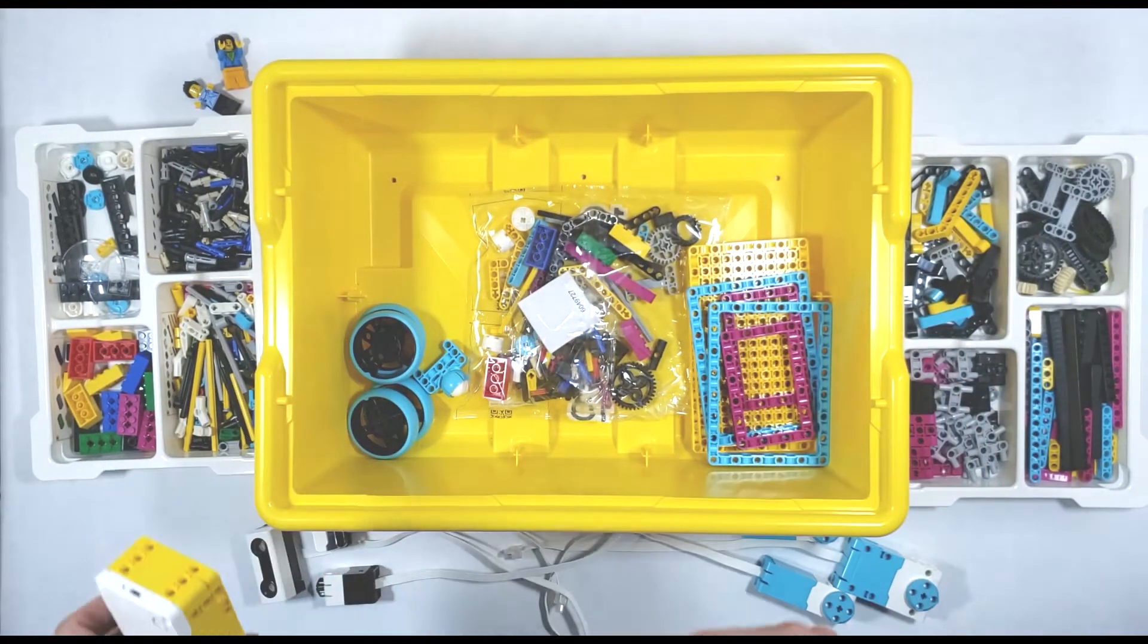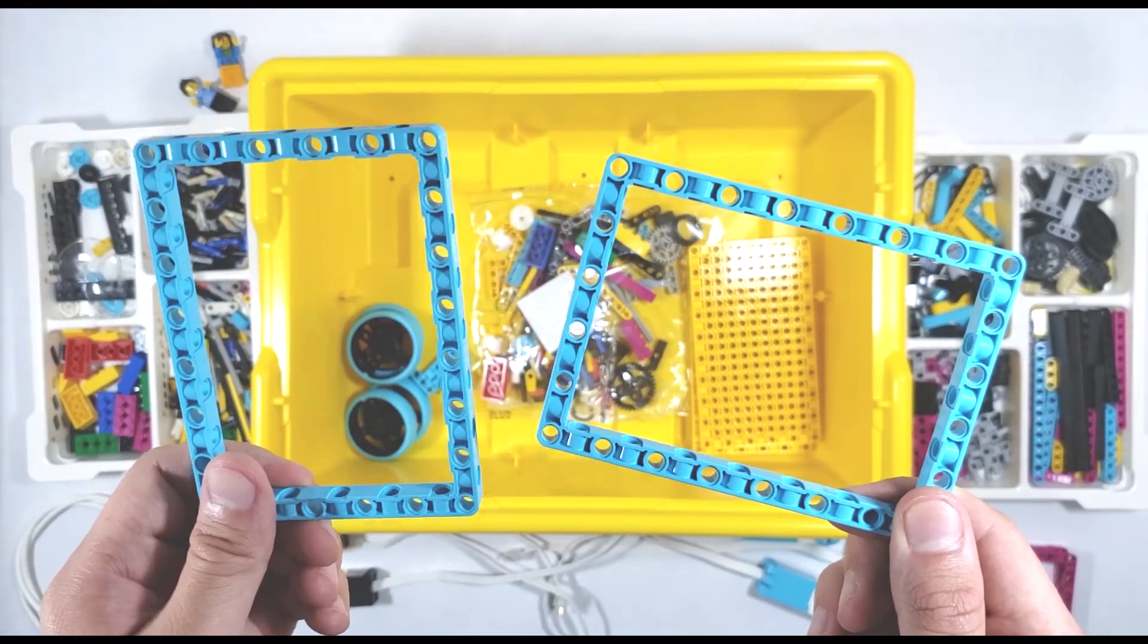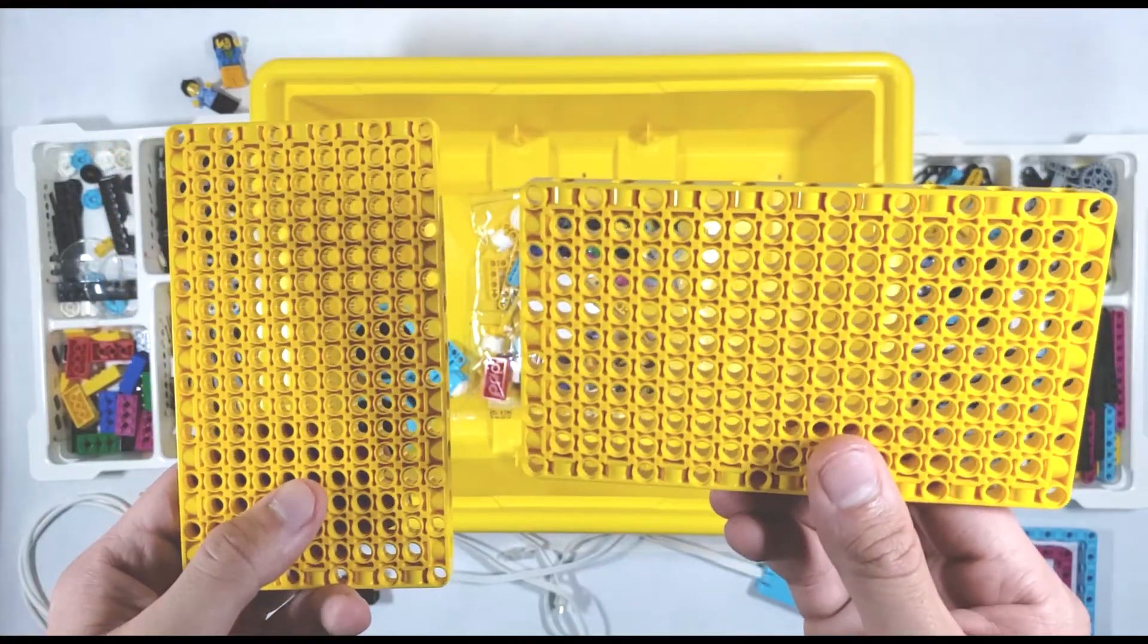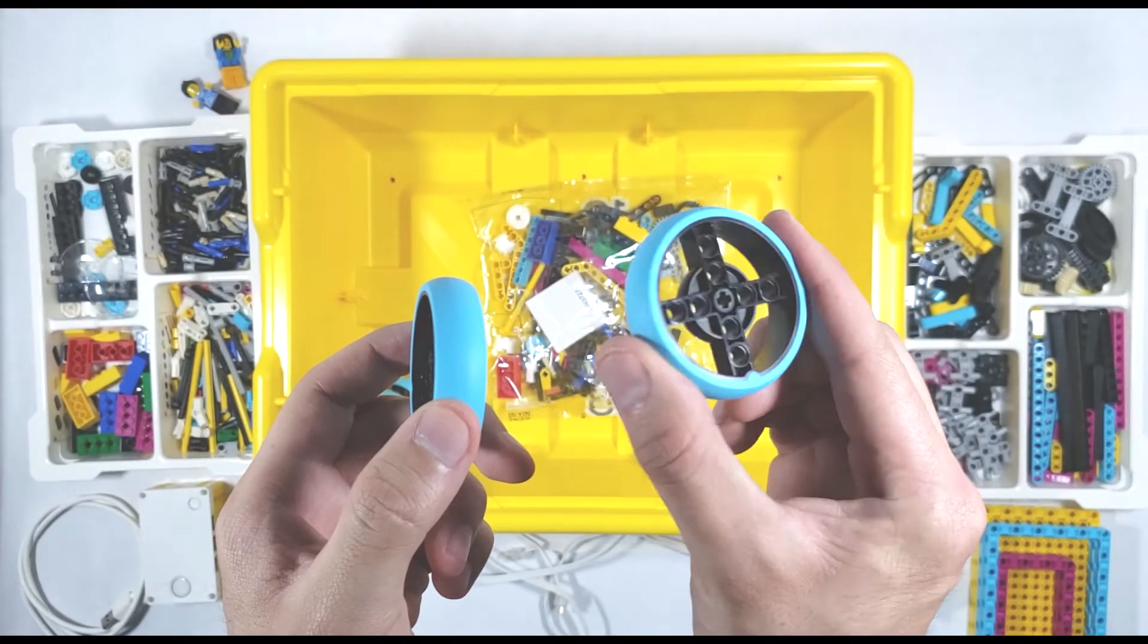The larger building structures are also sorted down here. We have two small and two large Technic frames, as well as two solid base plates that are awesome for building some seriously stable structures. For movement, the Spike Prime kit has a set of four low-friction tires that can be attached with pegs or axles.